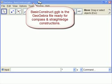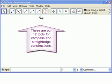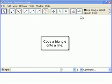Here we are in our basic construct GGB with our 12 tools that we need to do compass and straightedge constructions. And we're going to copy a triangle onto a line.